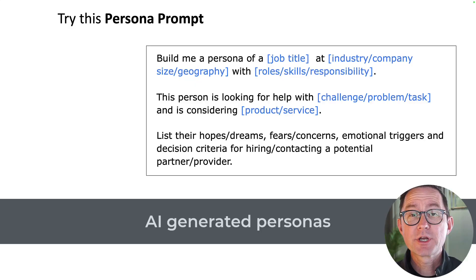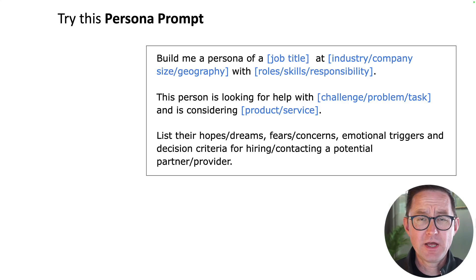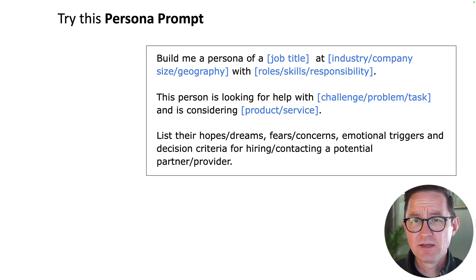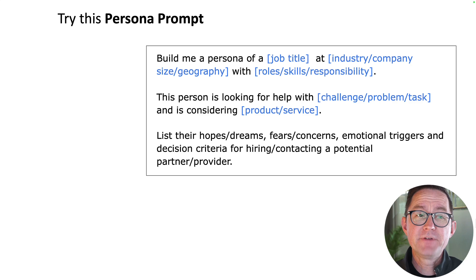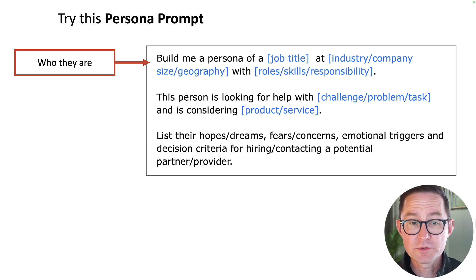To understand this audience, we need to first train AI on the target. We're going to use a persona prompt. Here's a basic one — I've got much more elaborate ways to do that. If you already have good prompts, ideal client profiles, or battle-tested sales-vetted ICPs, use those. If not, this will get you partway there. It simply says: build me a persona of a job title in an industry, in a geography, at a company. They've got roles, responsibilities, and they've got a problem and they're looking for help.